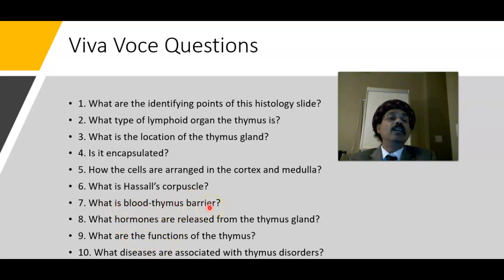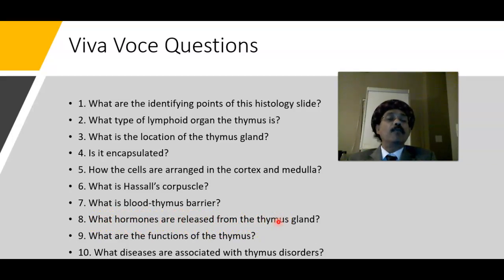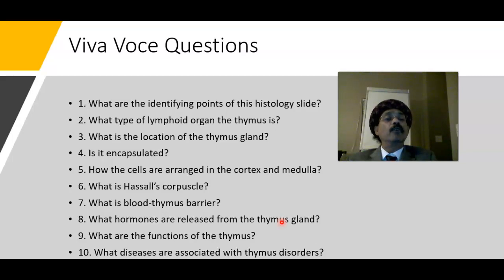The blood-thymus barrier is formed by the thymic epithelial reticular cells, blood vessels, and perivascular connective tissue, functioning to protect the developing T lymphocytes in the cortical region. Hormones released from the thymus include thymosin, thymulin, thymopoietin, and thymic humoral factors. The thymus is also regulated by external hormones such as adrenocorticotropic hormone, growth hormone, somatostatin, and thyroid hormone.